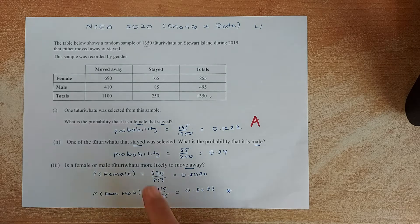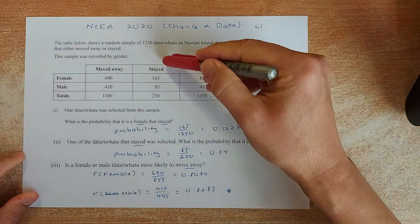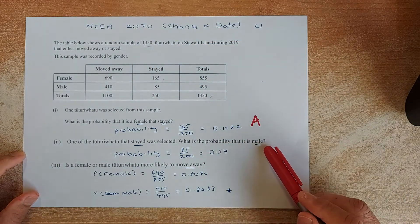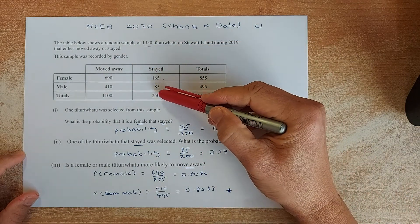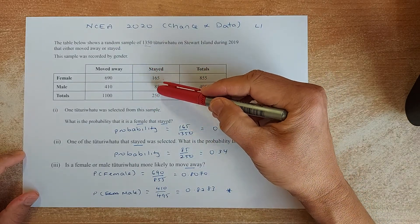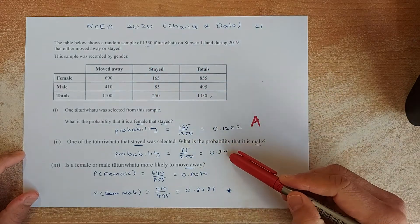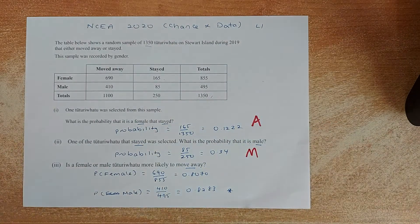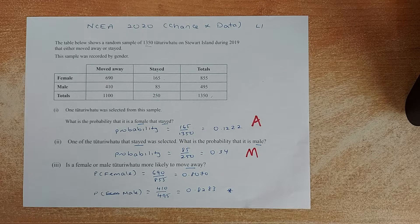Next one. One of the birds that stayed was selected, so we are looking at those who stayed. Only those who stayed. What is the probability that the male? So it's going to be 85 out of 250 because only we are looking at the stayed birds. So 85 out of 250, and the answer is 0.34. And that will give you a merit.